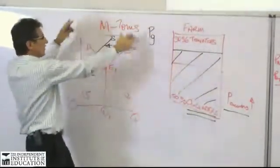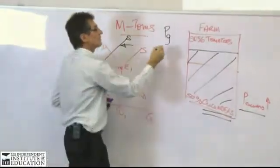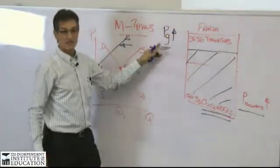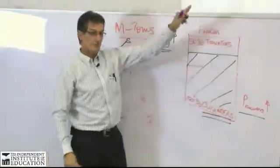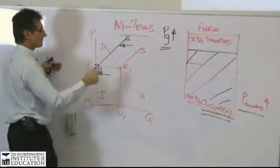But we're not asking that question. We're asking the question here in the tomato market, what is the response when PG is going up, a substitute in production, cucumbers goes up. Supply curve in the market for tomatoes shifts to the left.